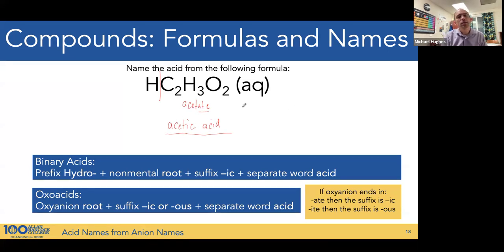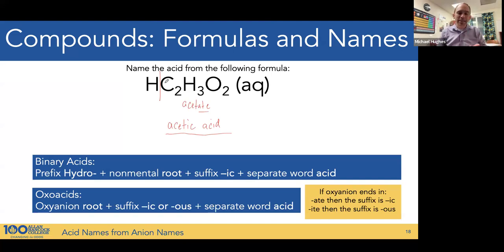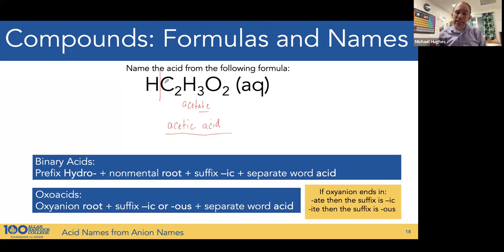Acetic acid comes from the acetate oxoanion and hydrogen. That's just a quick primer on how to identify acids in the context of nomenclature, and how to separate them between binary and oxoacids and then name them. Hopefully you take this knowledge into nomenclature practice, go through that practice, check your results, and make sure you know how to name acids.